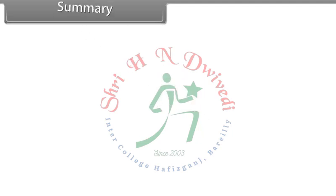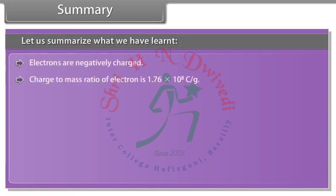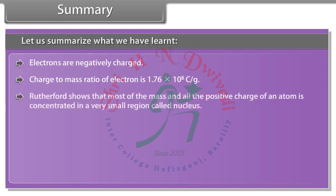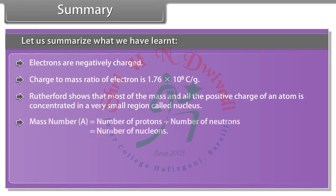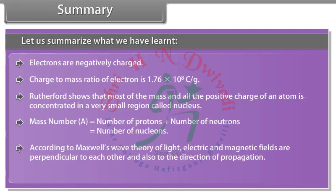Summary: Electrons are negatively charged. Charge to mass ratio of electron is 1.76 × 10⁸ coulombs per gram. Rutherford showed that most of the mass and all the positive charges of an atom are concentrated in a very small region called the nucleus. According to Maxwell's wave theory of light, electric and magnetic fields are perpendicular to each other and also to the direction of propagation.